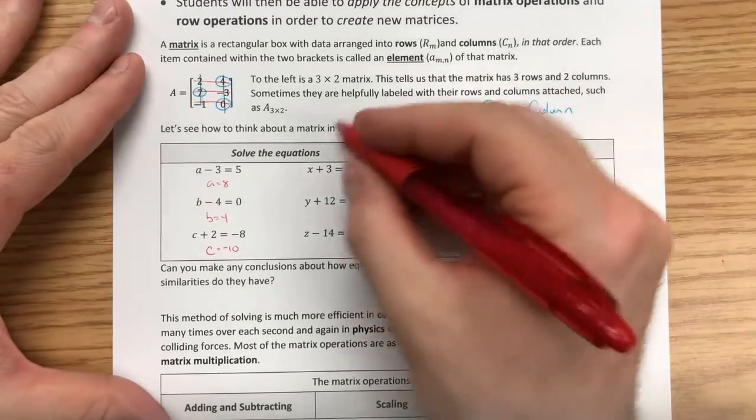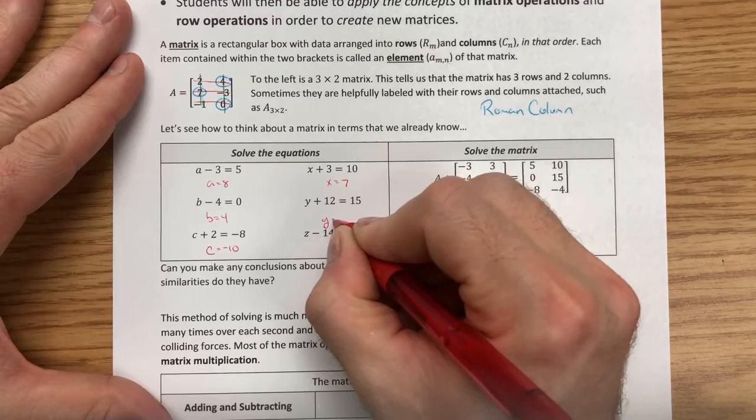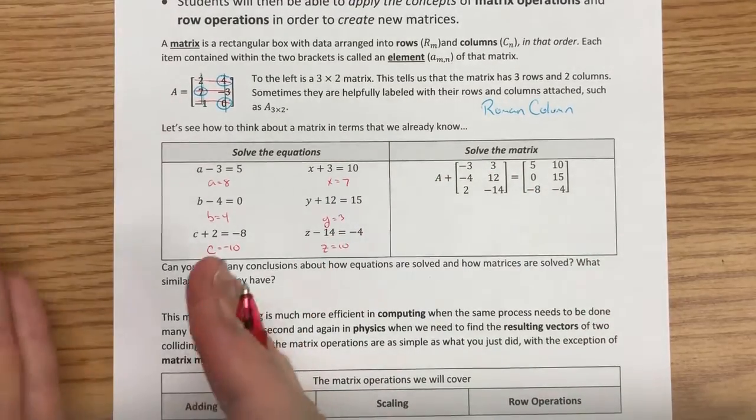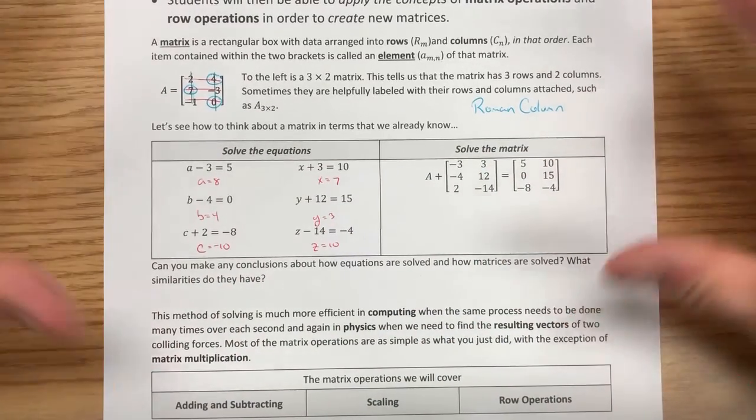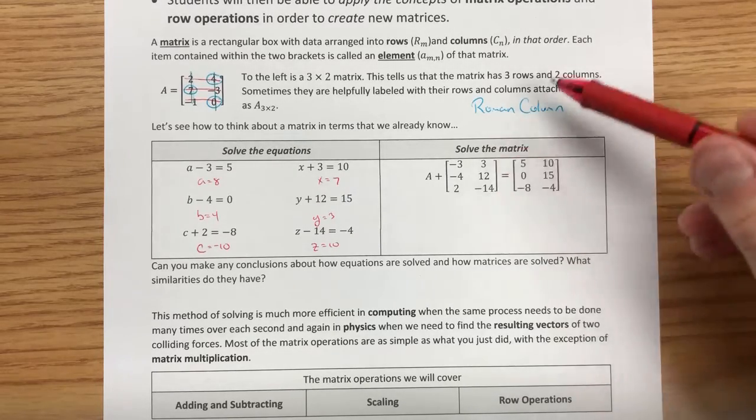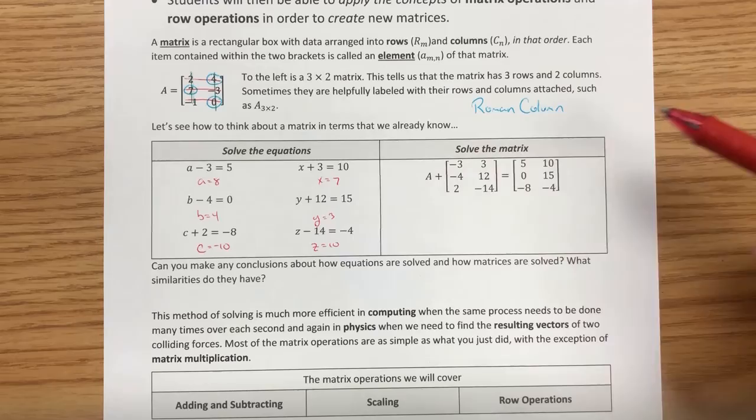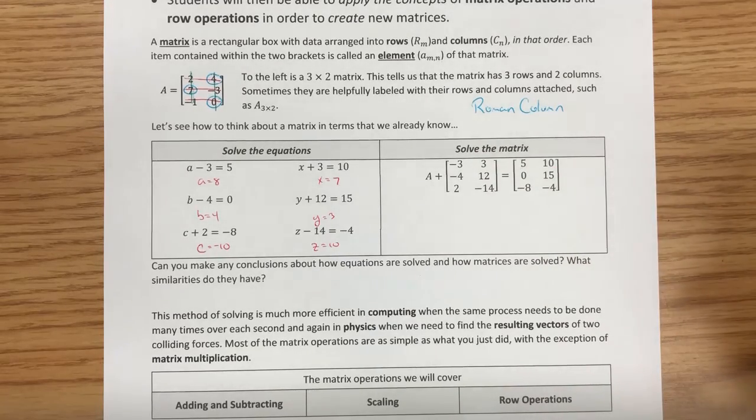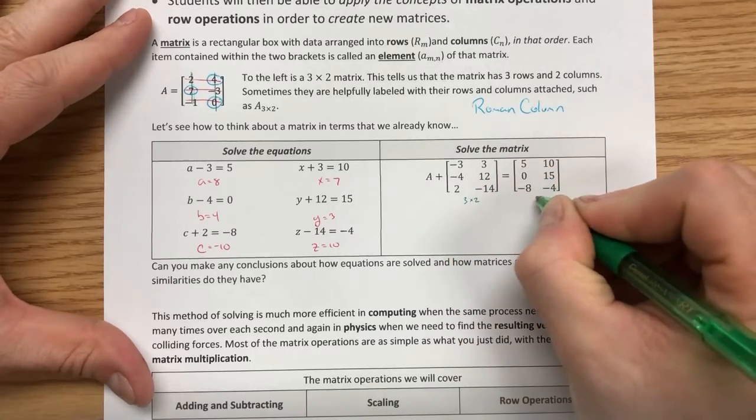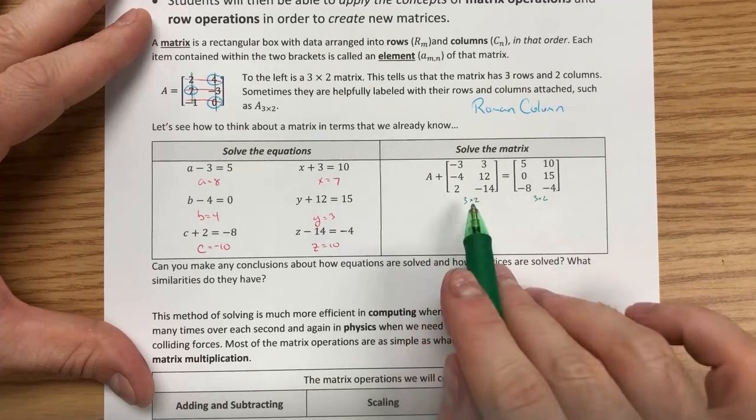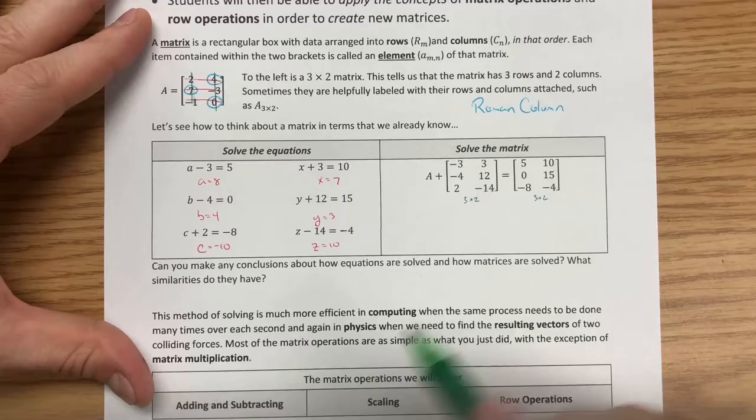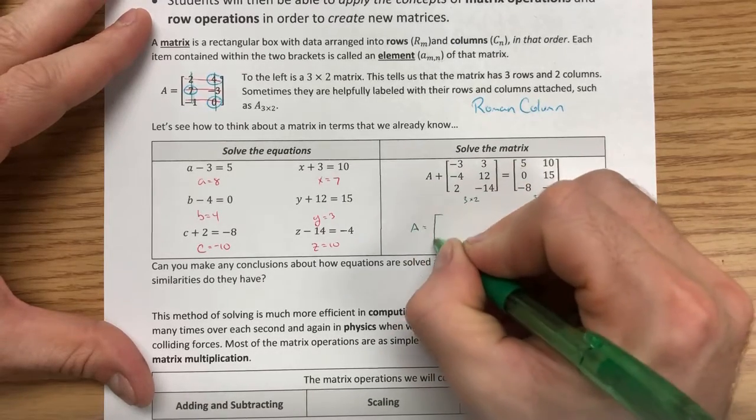We can see that equations aren't really too bad. In fact, all of these we can solve pretty quickly. Translating over into a matrix, a matrix is solved almost exactly the same way. If we're looking at this matrix and saying, I have this matrix plus something right here is equal to this matrix. I know that if this is a 3 by 2 matrix and this is a 3 by 2 matrix, what do you think we're going to add to this 3 by 2 matrix to get a 3 by 2 matrix? If you said a 3 by 2 matrix, you would be exactly right.